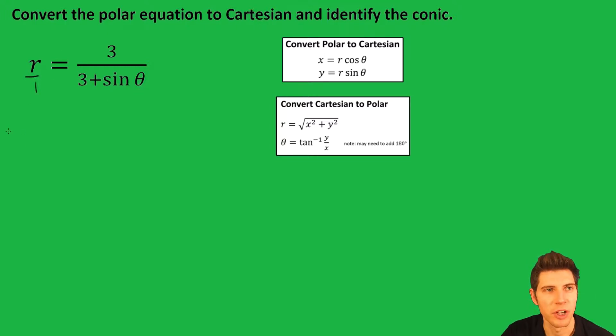So it's r times three plus sine theta equals three. All I did was cross multiply. Now I'm going to distribute the r. There's going to be 3r plus r sine theta equals three.